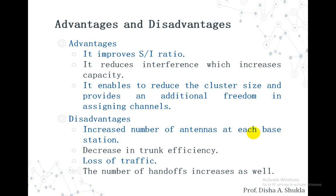In summary, cell sectoring divides a particular cell based on antennas — replacing an omnidirectional antenna (which emits in all directions) with directional antennas of either 120 degree or 60 degree opening. This increases coverage and capacity, and provides advantages such as improved signal to interference ratio and reduced interference. If you have any questions you can ask me. Thank you.